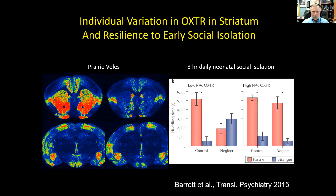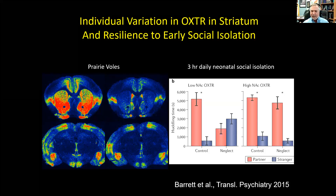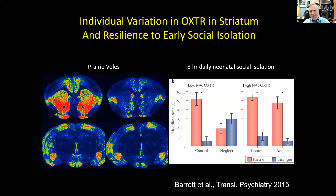When we put the pups back with the mom and dad, the parents would lick those pups. Immediate early gene staining found that licking causes activation of oxytocin neurons. When they come back with their parents, they get licking and grooming that releases oxytocin into the nucleus accumbens. If they have high densities of receptors there, they get a lot of signaling — these animals recover. So early life nurturing behavior releases oxytocin, which can shape the brain.